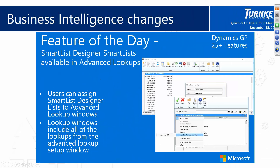Another feature: SmartList Designer smart lists are now available in your drop-downs. As you create new smart lists — say a brand new smart list for customers — it would make perfect sense for lookups when looking up a customer, but we weren't able to surface it before. Now there's a new menu option where you can select your SmartList Designer-created smart list for customers, vendors, items, or whatever. And with the version of GP that added the functionality to set a default view, now you can have a SmartList Designer favorite set as the default view.